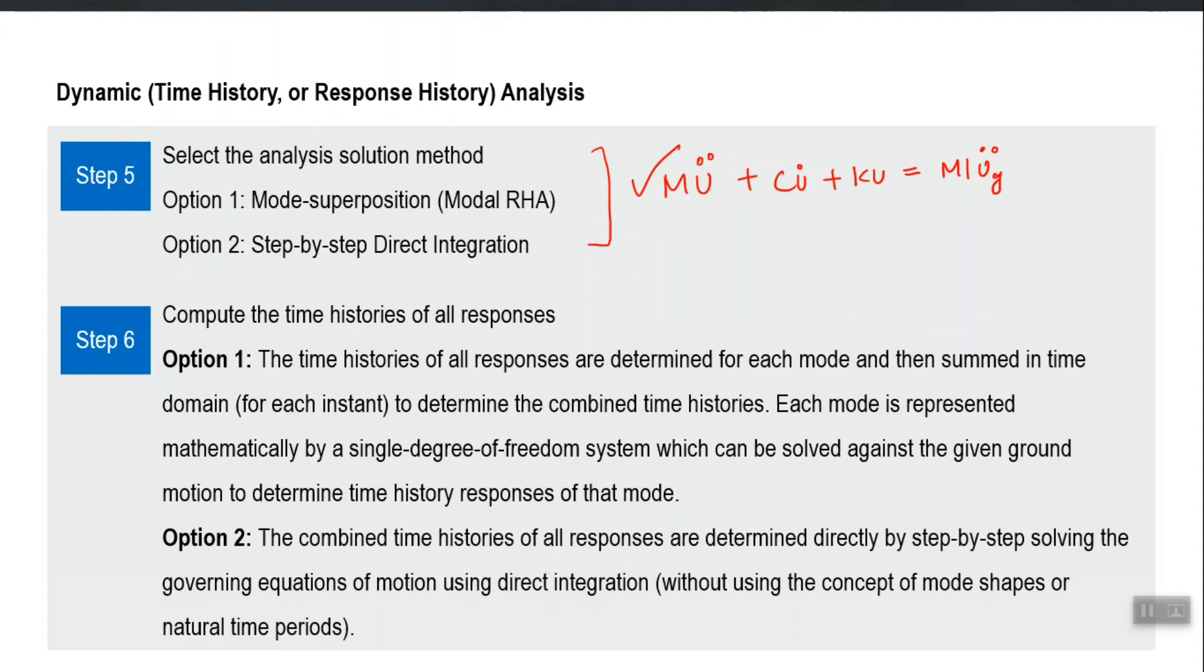Compare to RSA, here the dynamic analysis for each single degree is performed step by step direct integration for a single degree or the Duhamel integral. Just consider from where this method is different from RSA. In RSA, we simply pick the peak response from the spectrum itself corresponding to the time period of that mode and on the other hand here we run that single degree of freedom system for that earthquake so that we get the complete history. This is the main difference between RSA and modal RHA.